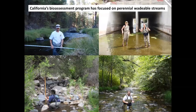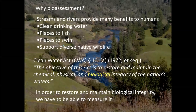Bioassessment can be used to assess any water body type, but the state's program and our lab in particular have focused on perennial wadeable streams. Streams and rivers provide many benefits to humans — clean drinking water, places to fish, places to swim, and they support a diverse native wildlife fauna. In recognition of those ecological services, Congress in 1972 passed the Clean Water Act to restore and maintain the chemical, physical, and biological integrity of the nation's waters. That's our fundamental mission: to restore and maintain the biological integrity of California streams. But in order to restore it, we have to be able to measure it, which is actually really challenging in a state like California given its diverse physiography.